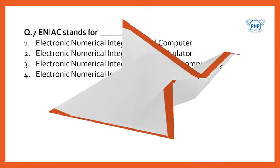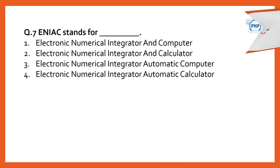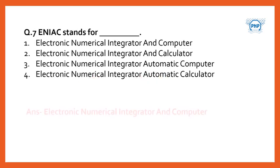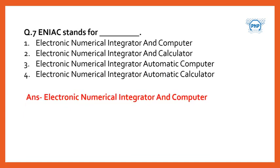ENIAC stands for — the options are: Electronic Numerical Integrator and Computer; Electronic Numerical Integrator and Calculator; Electronic Numerical Integrator Automatic Computer; Electronic Numerical Integrator Automatic Calculator. The correct option is Electronic Numerical Integrator and Computer.